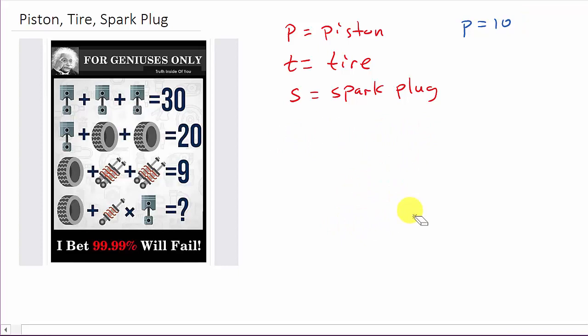All right, so we get P is 10. All right, so now let's look at this line. So we have the piston, which is P, plus a tire, that's T, plus another tire T, equals 20. Now, we know P is 10, because we solved that up here, and then T plus T is 2T, and that equals 20. And then if we subtract 10 to both sides, we get 2T equals 10, divide both sides by 2, and we get T equals 5. And so we have T is equal to 5.